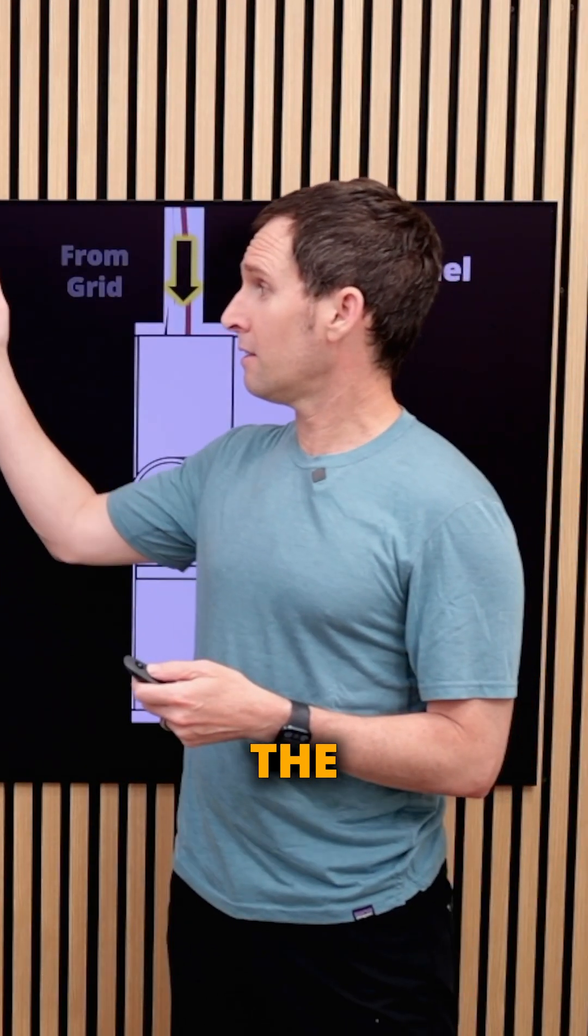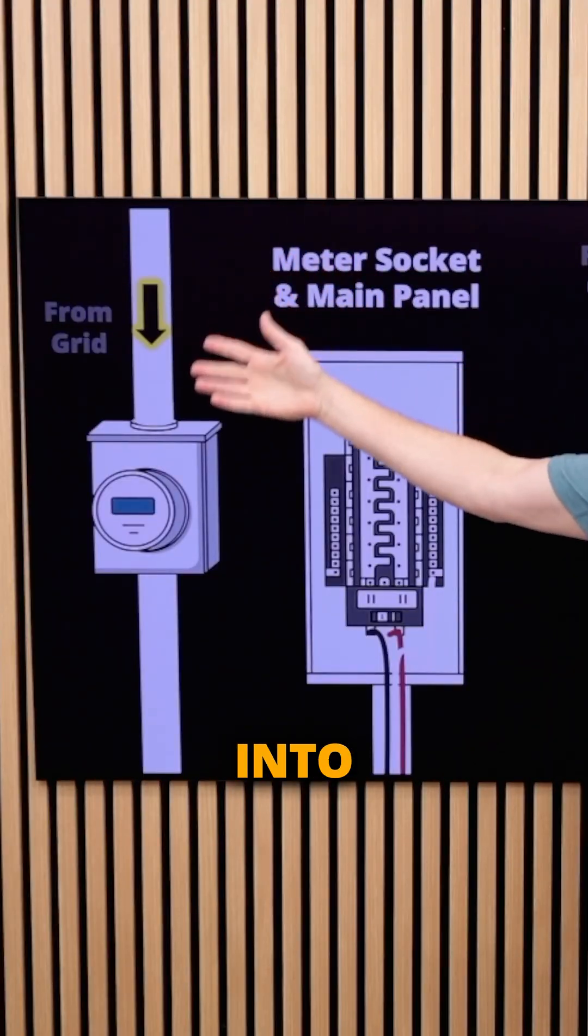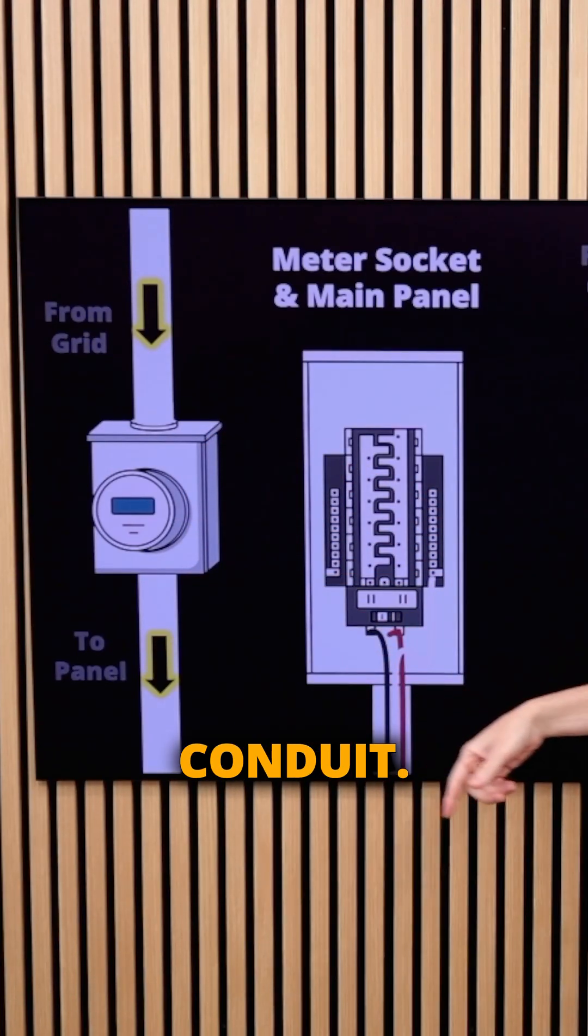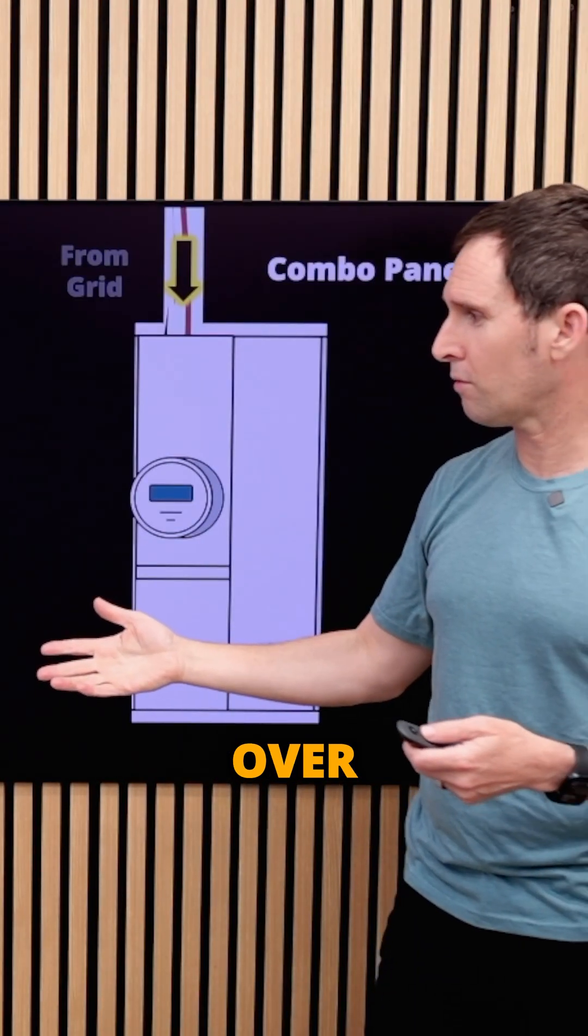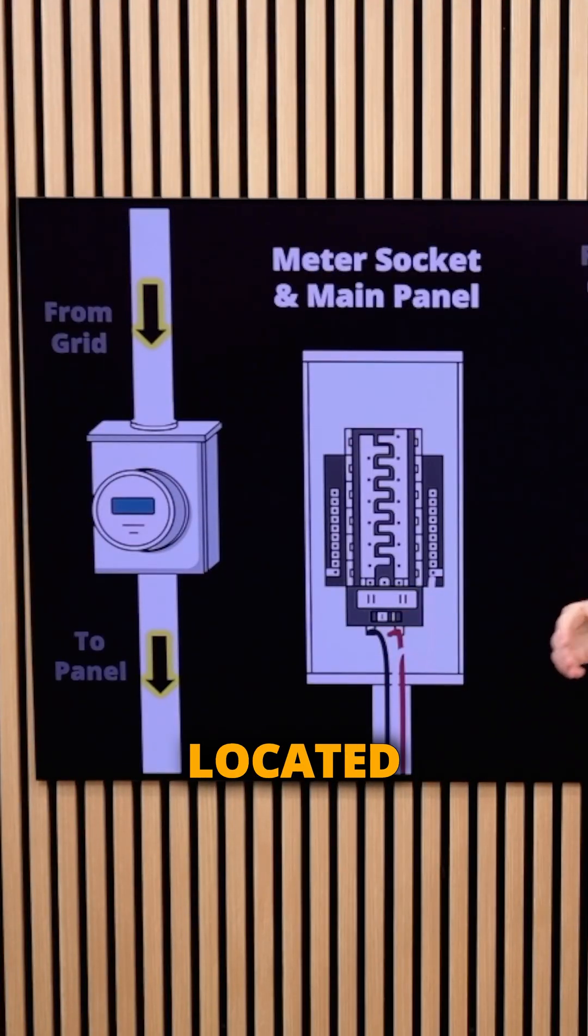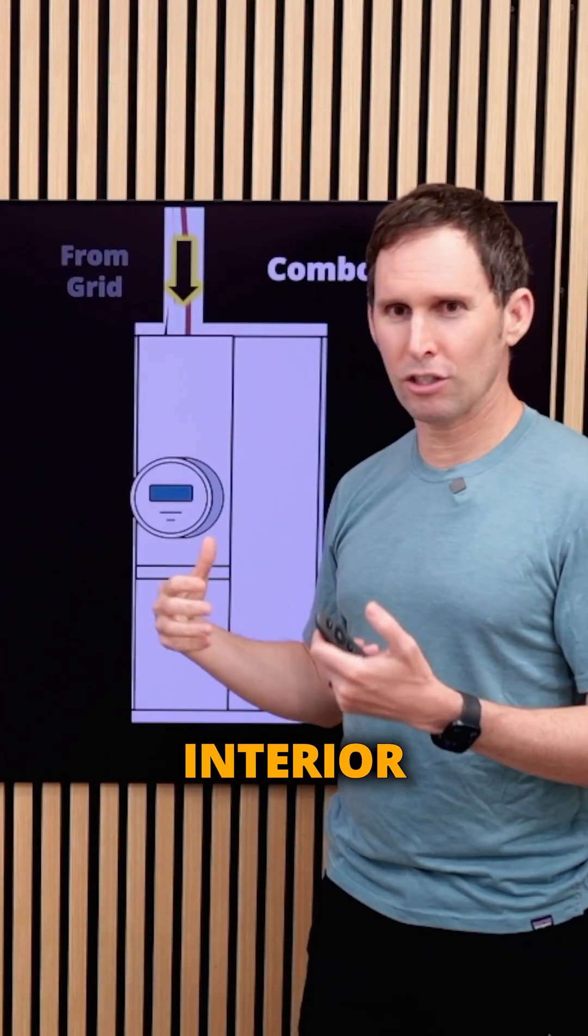In this case, the current from the grid comes into the meter socket, goes through the meter, and then gets fed through conduit - sometimes overhead but mostly underground - into a main panel located in the garage, on an outdoor post, or sometimes in an interior closet.